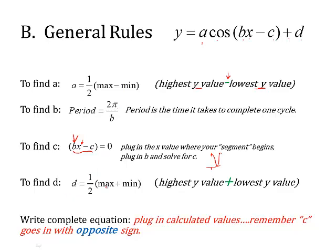To find d, you take the maximum y point, add it to the minimum point, then divide by 2. So write the equation - you plug in the calculated values and remember that c is going to go in with the opposite sign. Remember, the equation is a minus c, so whatever you calculate for c, you change the sign when you put it in the equation. All right, that's the general rules and mechanics. Let's try one.